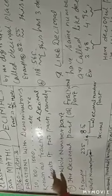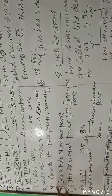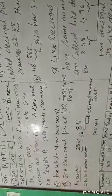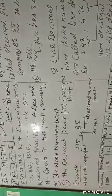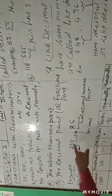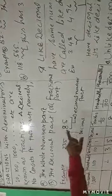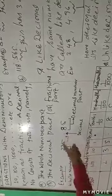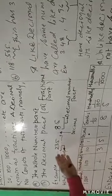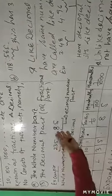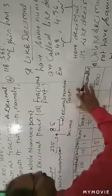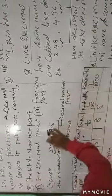Known as the fraction, a decimal number consists of two parts. Now, I have written this: 235.85. So two parts are there — there is a whole number part and there is a decimal part.